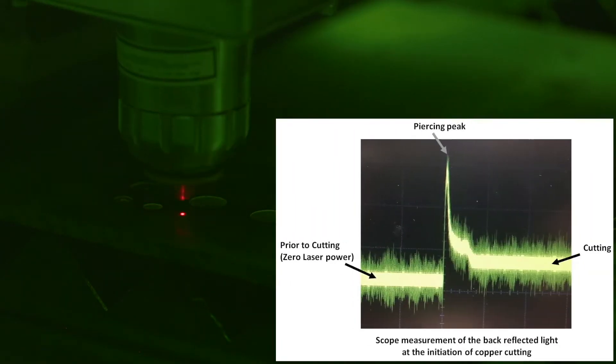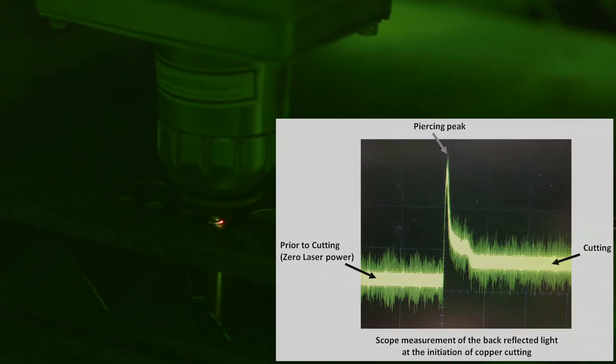The critical stage in the cutting of these reflective metals is the initial stage, or so-called piercing stage, when the laser beam interacts with the solid metal. When the cut is established, the laser mostly interacts with the molten material, which is much more absorbent.